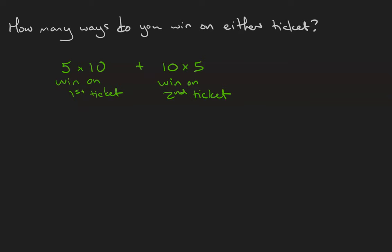But notice that both of these situations include winning on both tickets. So we need to subtract that overlap. So 50 plus 50 makes 100 minus 25 is 75 ways to win on either ticket.